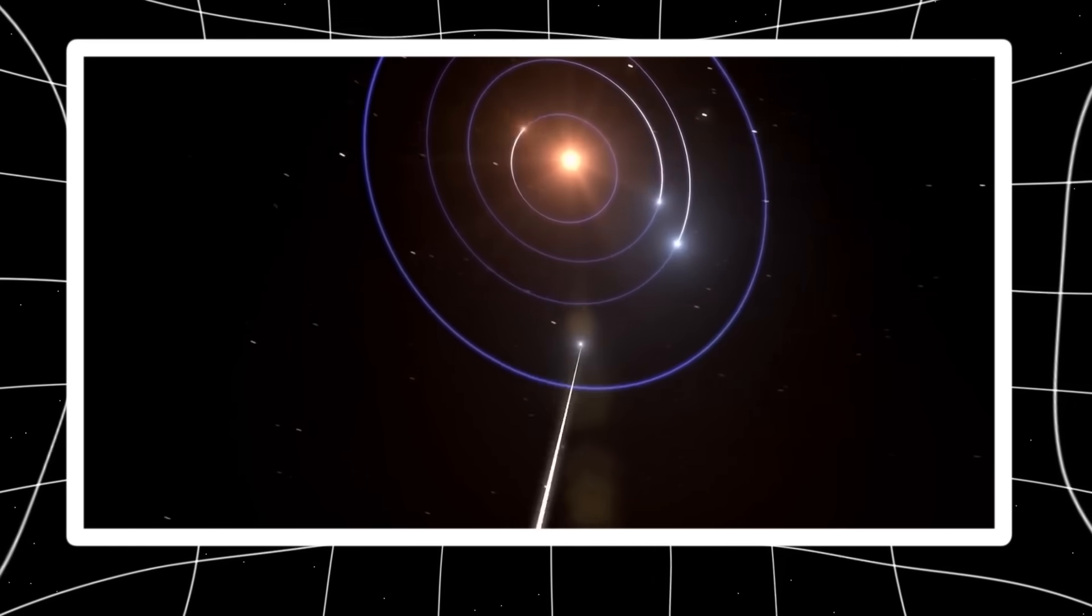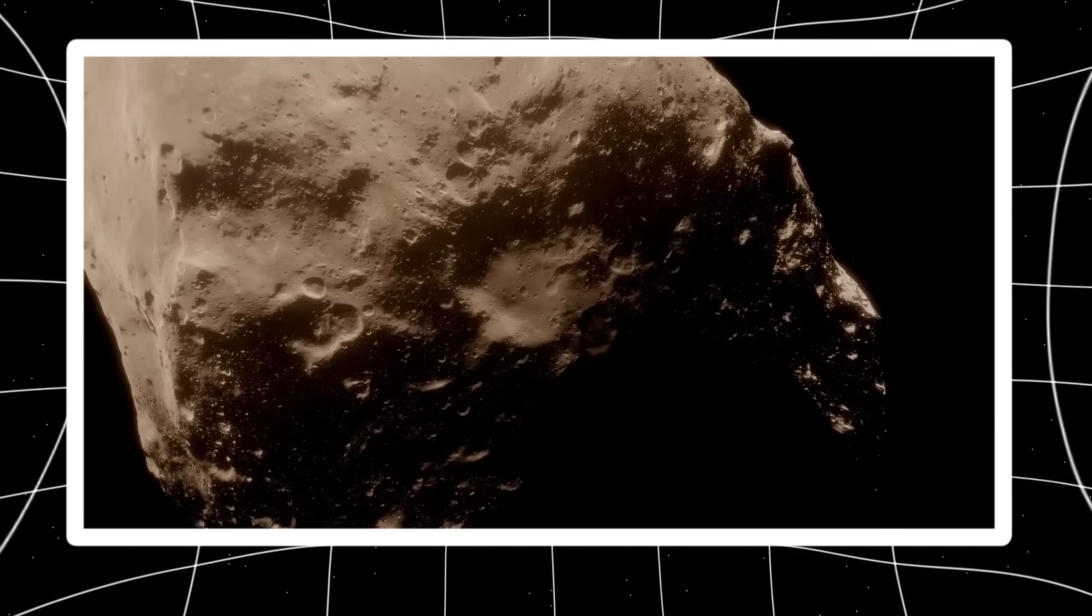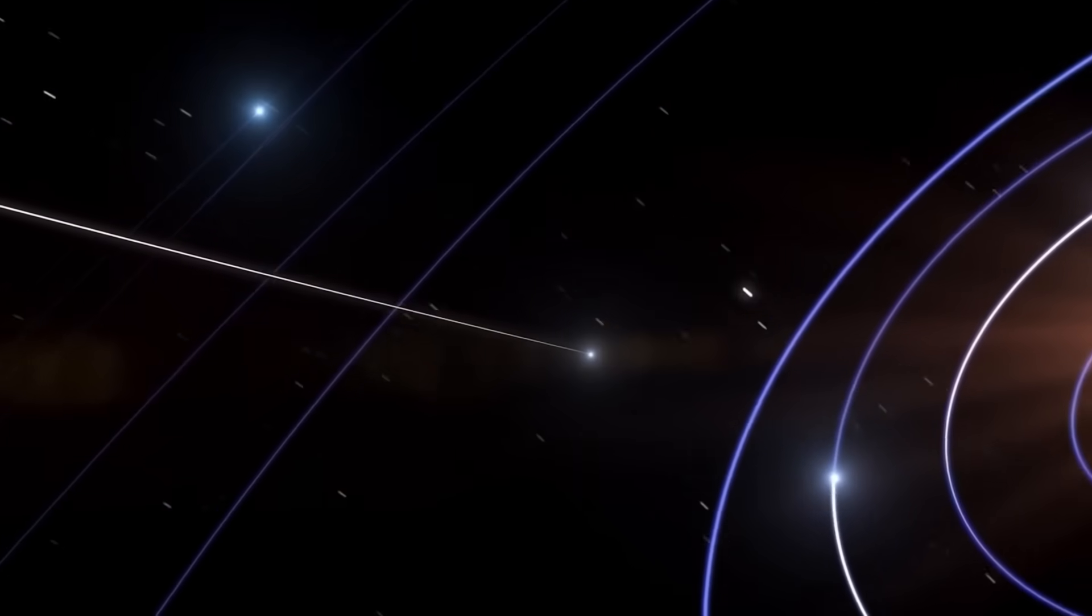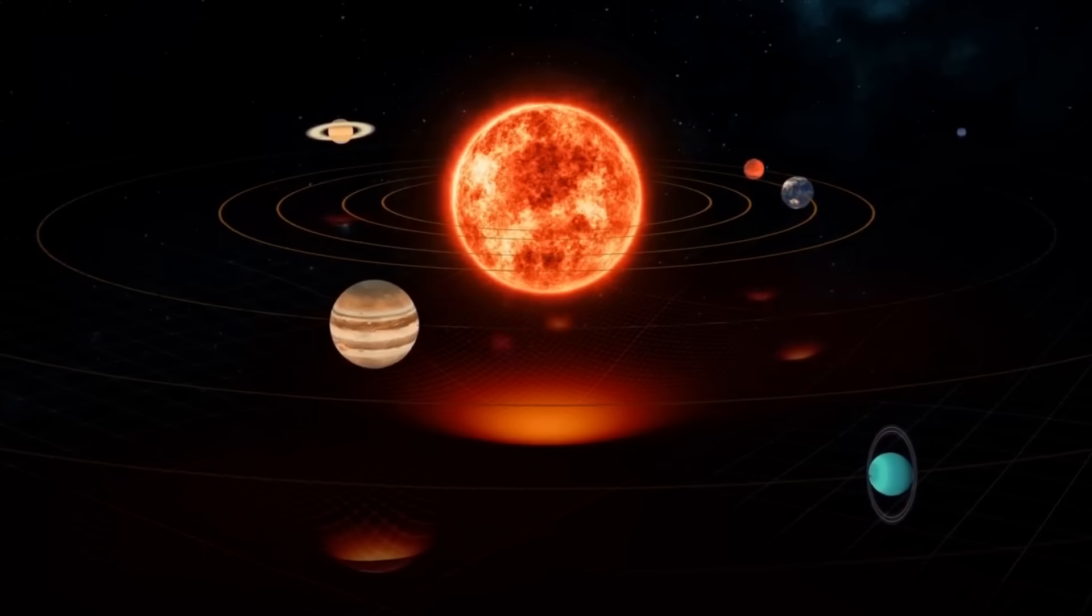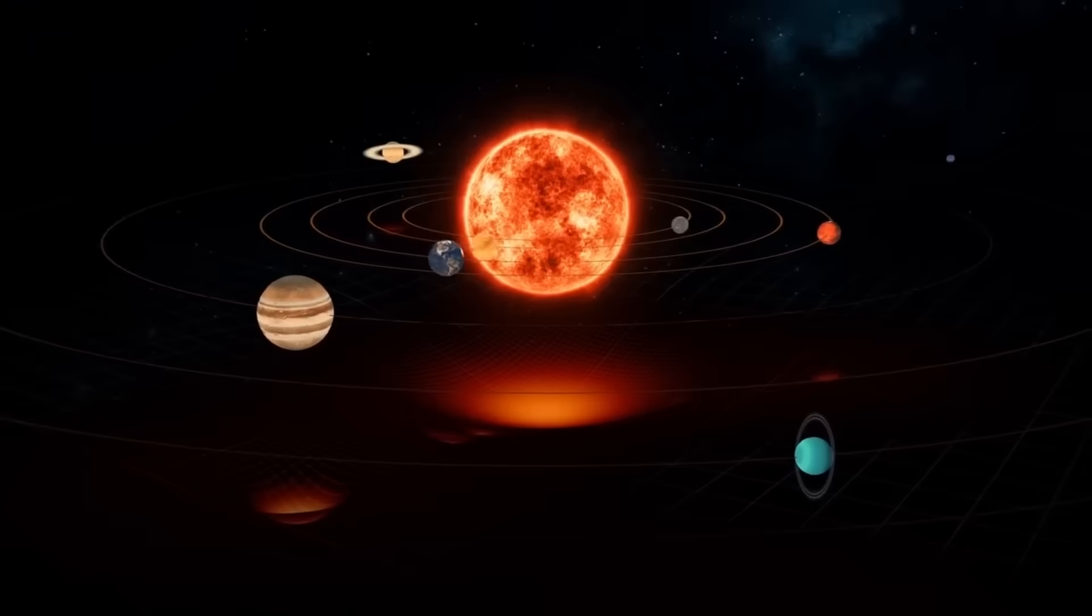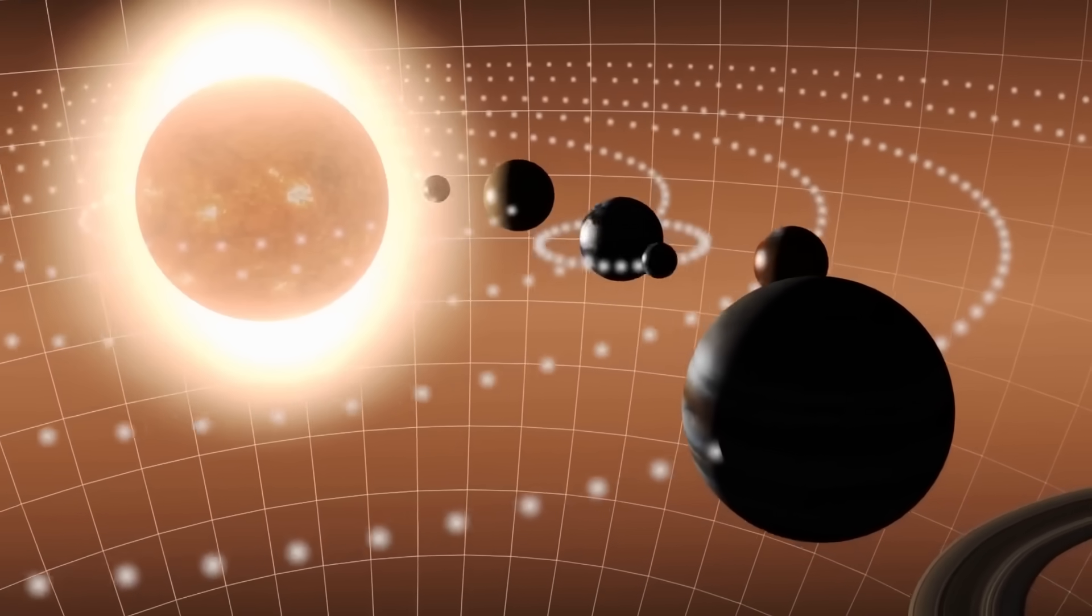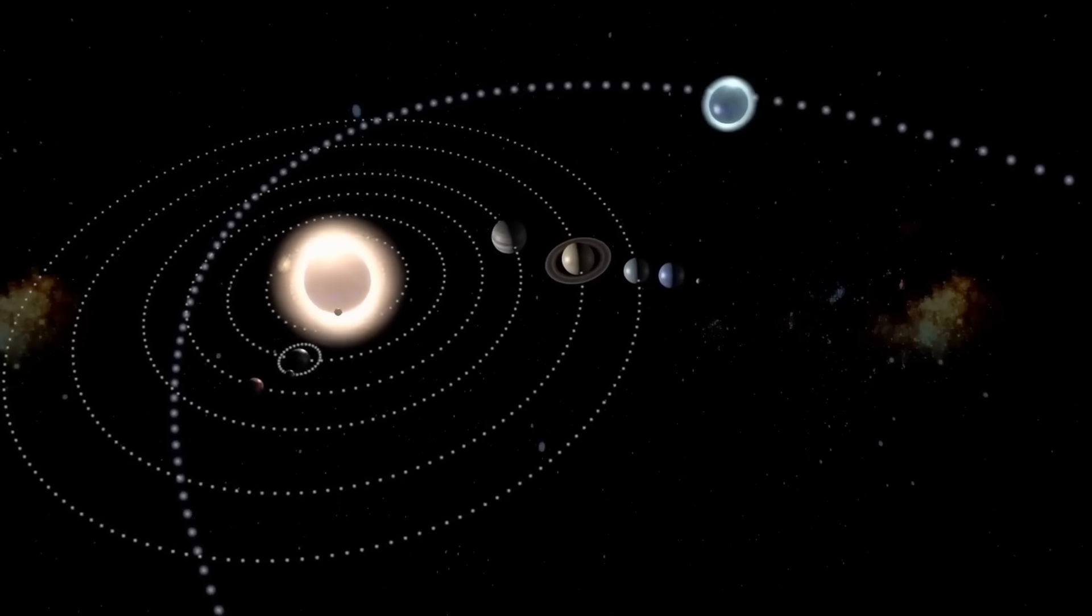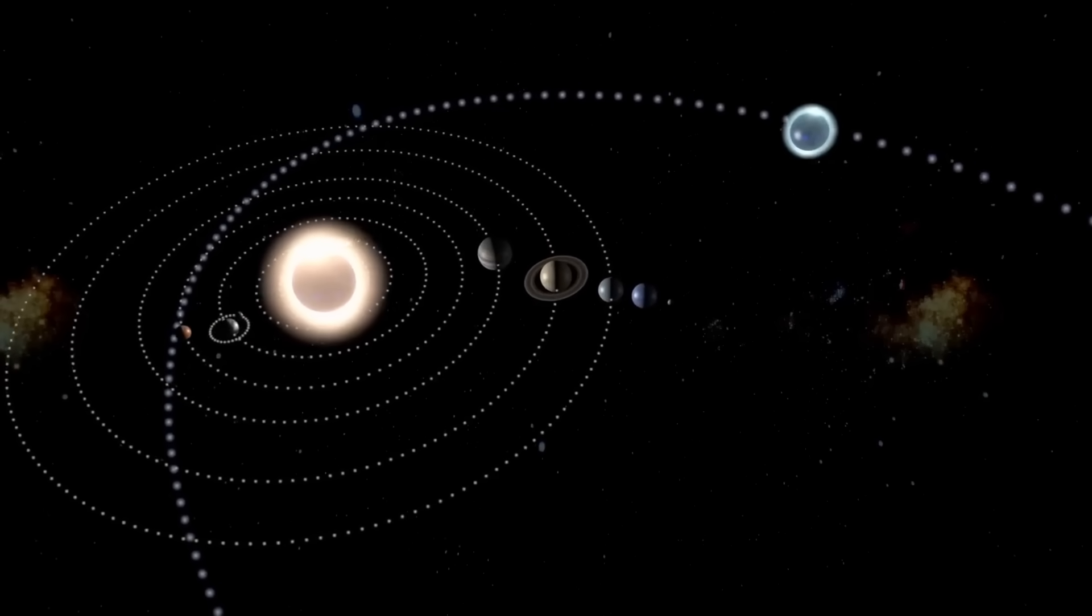But now, against all laws of physics as we know them, it has returned on a path that defies every gravitational model. And what's even more disturbing? The instruments tracking its return have confirmed that it's not alone. Dozens of similar objects have emerged alongside it, forming a constellation of anomalies. They don't drift like rocks. They hover. They oscillate. They adjust. And most chilling of all, they do so in perfect coordination.